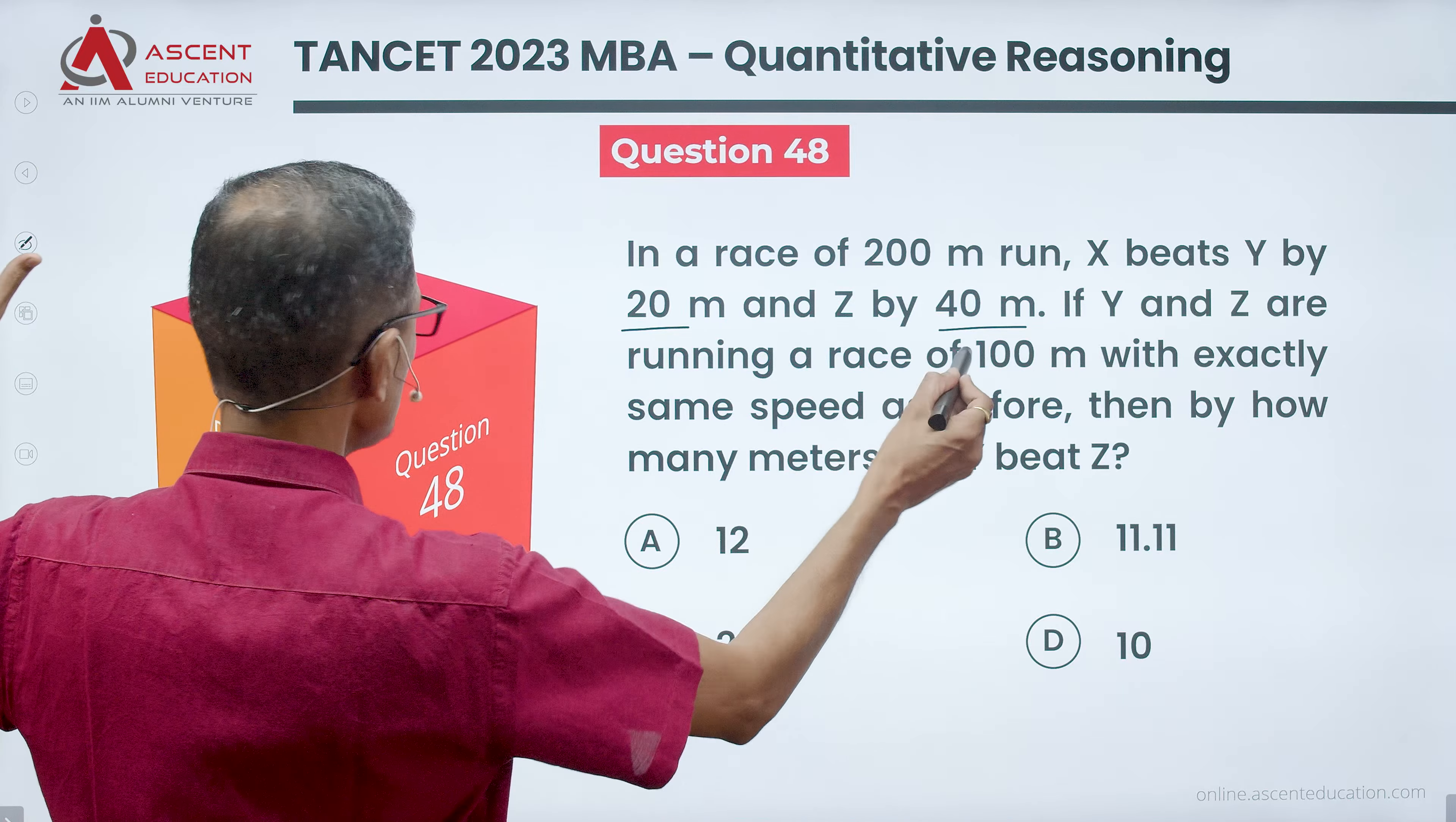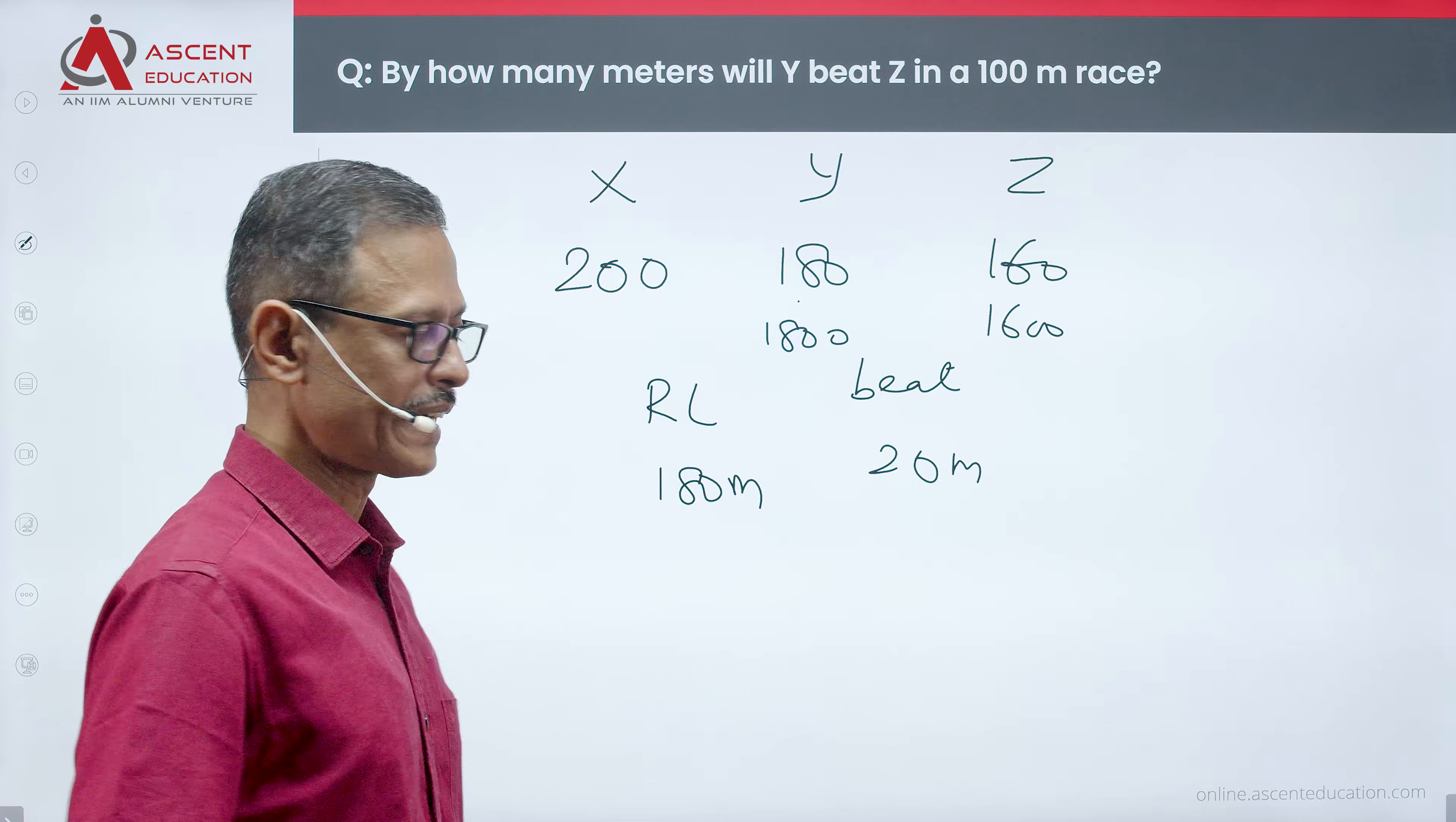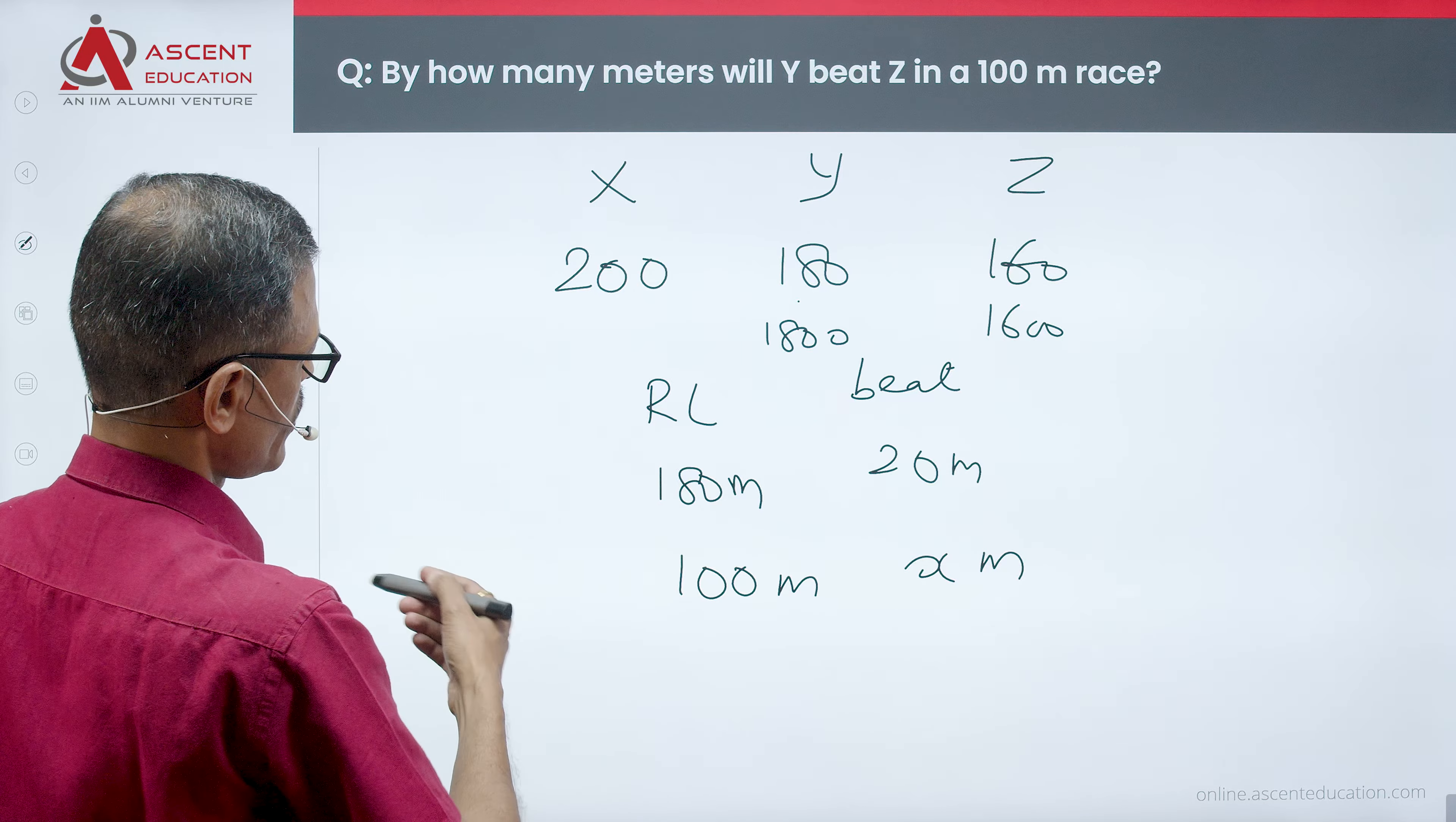What do we do if we get a 100 meter race? 180 meter race means 20 meter difference. 100 meter race means he will beat him by X meters. Now let's check out how to solve it.